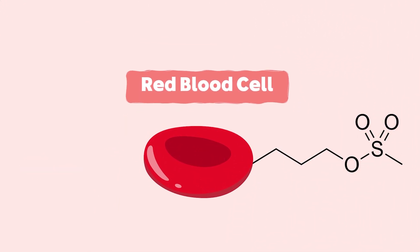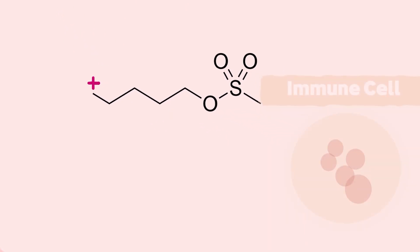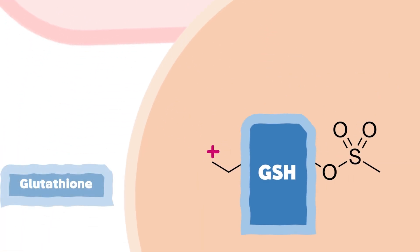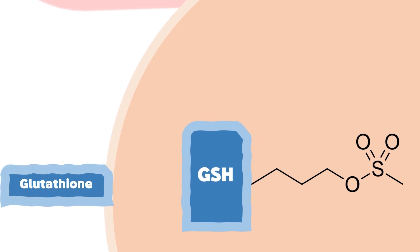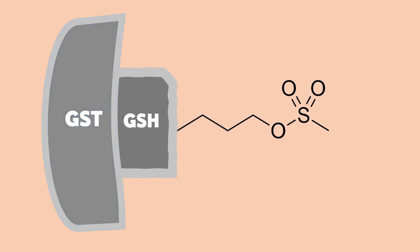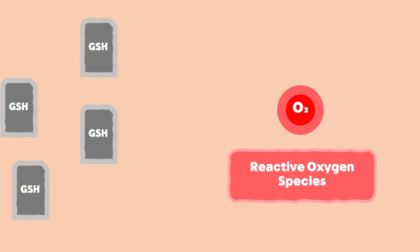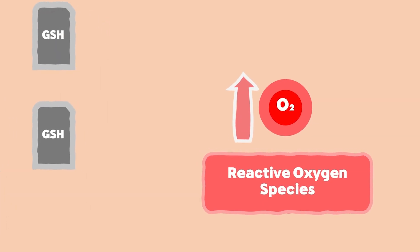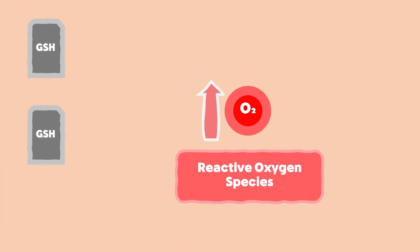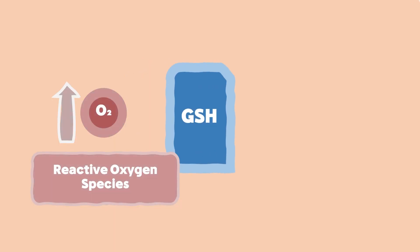A portion of the injected Busulfan binds with the red blood cells and the plasma proteins. It can also passively diffuse through the membrane of immune cells. It mostly reacts with glutathione (GSH). The complex formed between GSH and Busulfan can bind with GST, the glutathione S-transferase, and prevents the formation of new glutathiones.